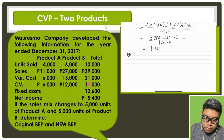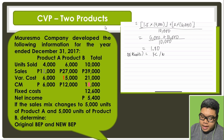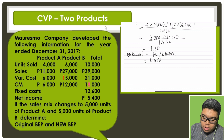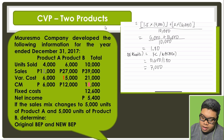Now, to compute for the break-even point in units, we take fixed cost divided by the weighted average contribution margin. We have fixed cost of 12,600 divided by 1.80, giving us 7,000 units for our break-even point in units.